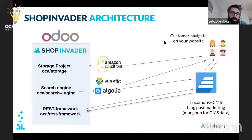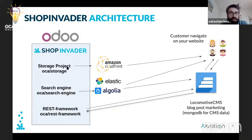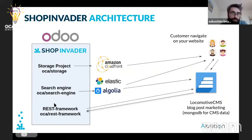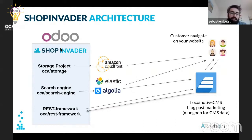Looking at the architecture: basically you have Odoo, and we have built a lot of modules on top of it. There is a generic module in OCA for storage of images, a generic module in OCA for the search engine connector, and a generic REST framework to build a REST API on top of Odoo. Then you have the ShopInvider project hosted on GitHub, where we use all of these bricks to build the solution.